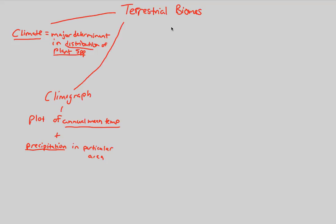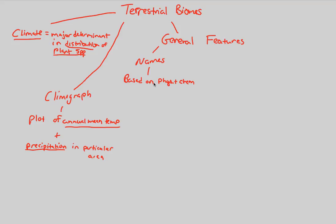We can now establish some general features of terrestrial biomes — things that most terrestrial biomes have in common. First, terrestrial biomes will be named for purposes of classification. Names of terrestrial biomes are based on both physical and chemical features of the environment, plus the predominant — meaning most prevalent and obvious — vegetation type.